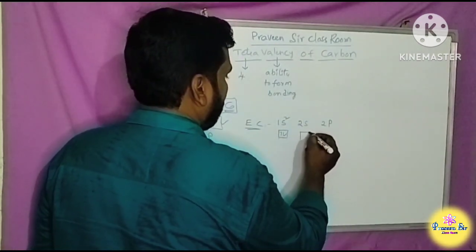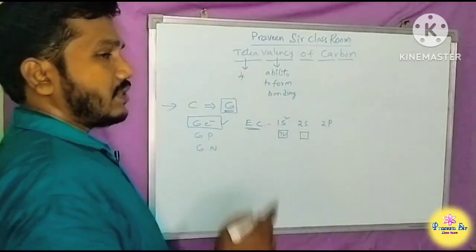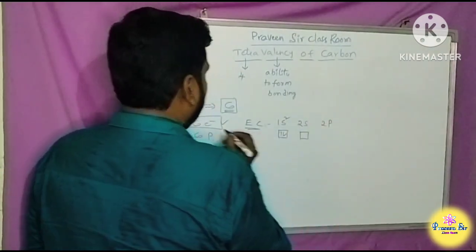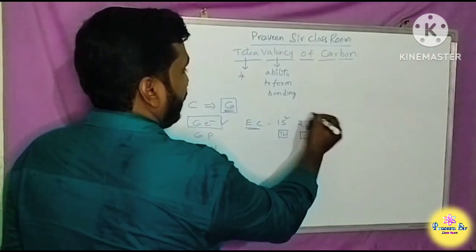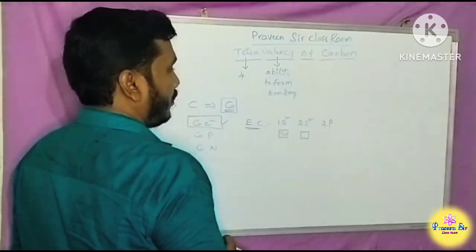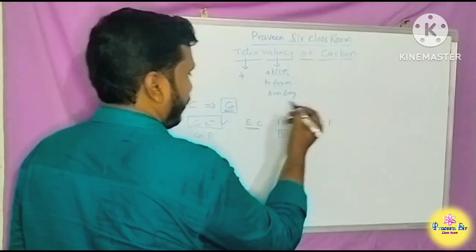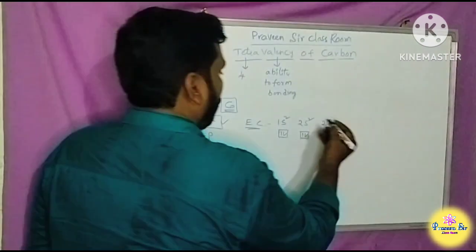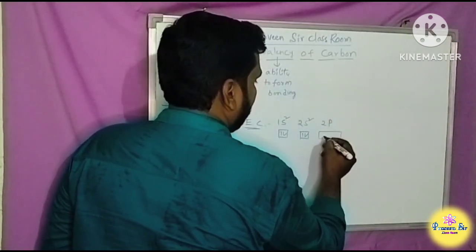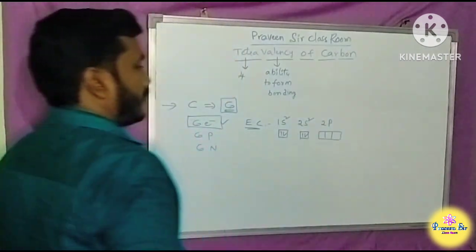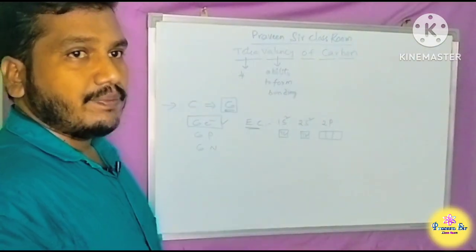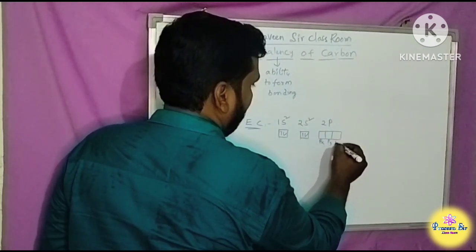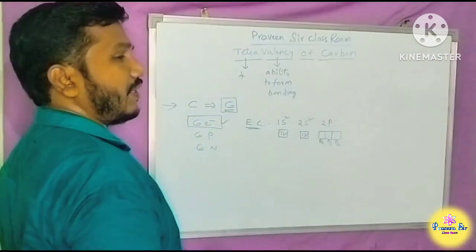The 2s orbital also has 1 orbital, 1 box, holding 2 electrons. The 2p subshell has 3 orbitals along the axes: Px, Py, and Pz — 3 orbitals that can hold up to 6 electrons.